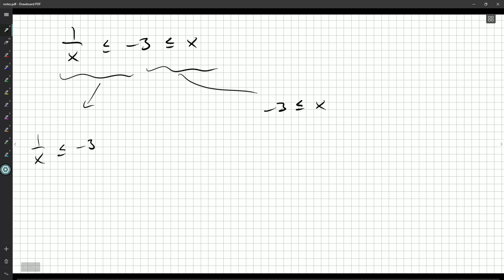Okay. So where can we go from here? Well, 1 over x here, clearly one thing I can conclude from this part right away. One over x must then be less than zero.